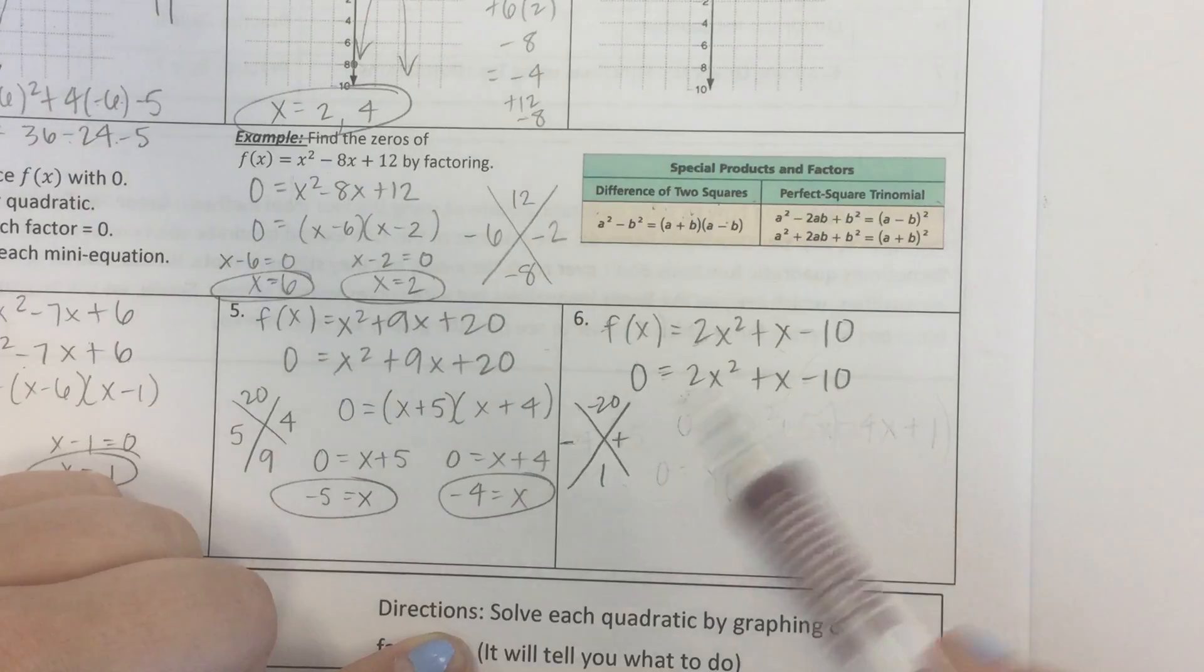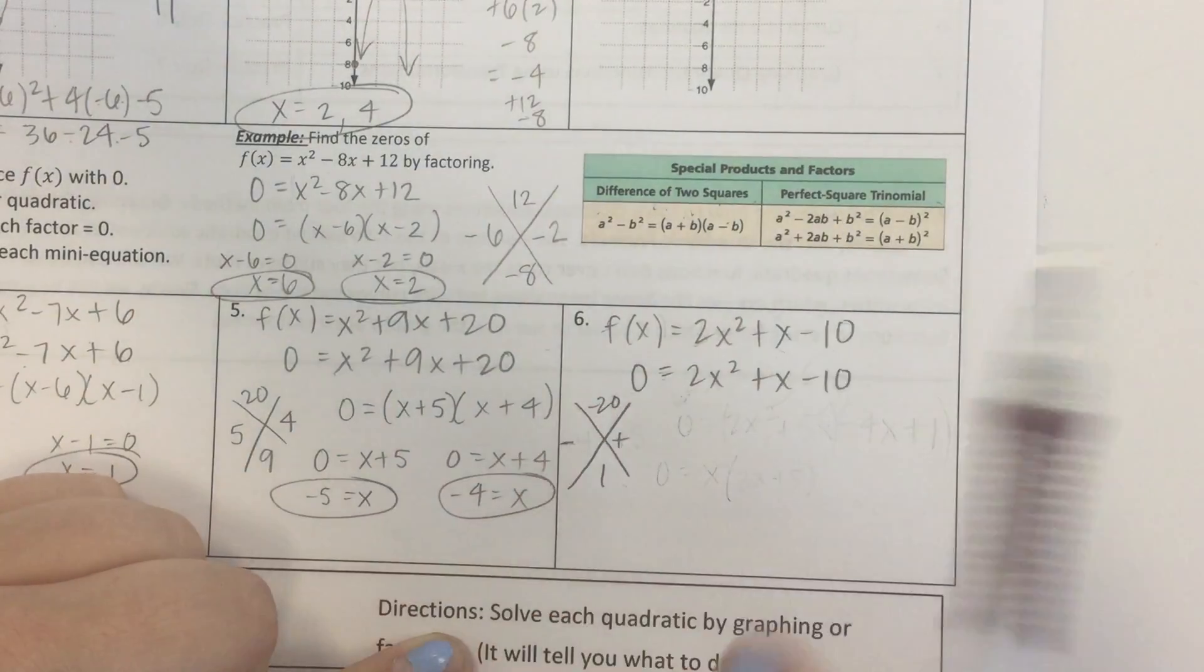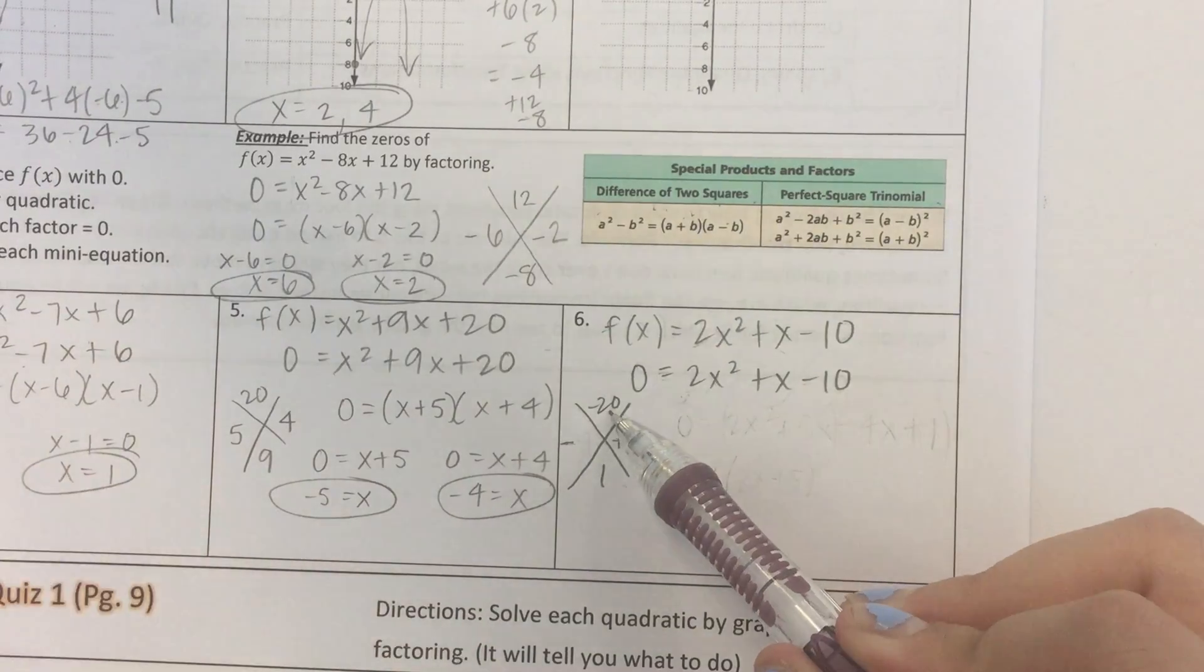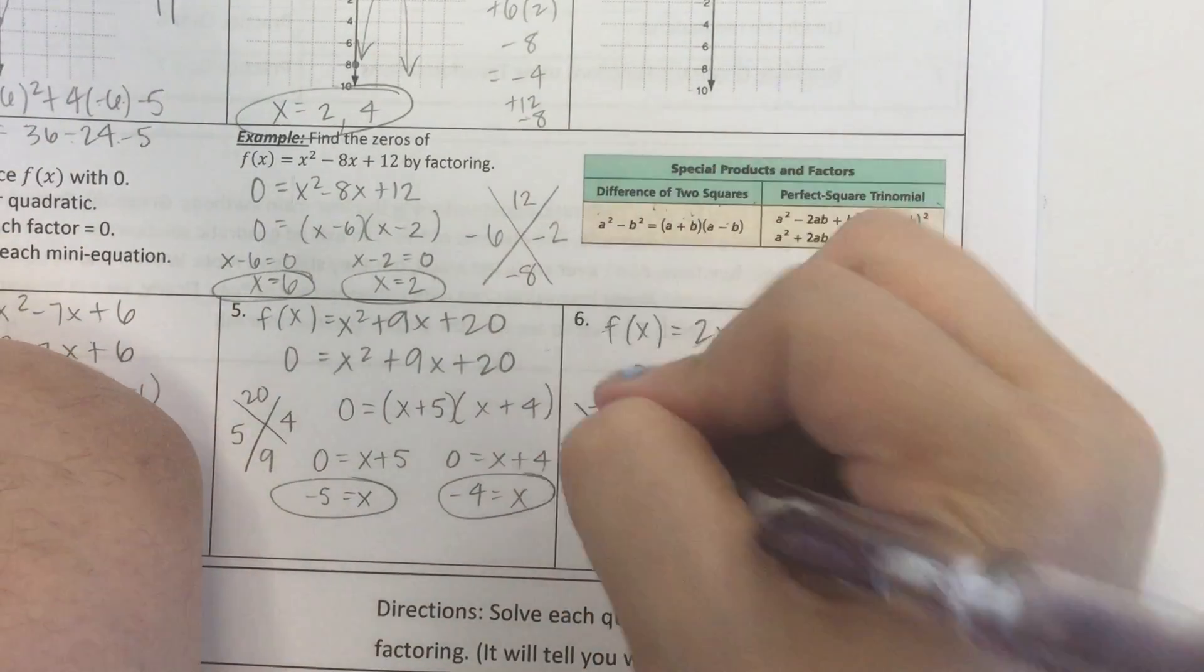You kind of see where I erase some stuff. I made this video once already and made a mistake, so I just started over from scratch. So, our two numbers that multiply to negative 20 and add to 1 are positive 5 and negative 4.